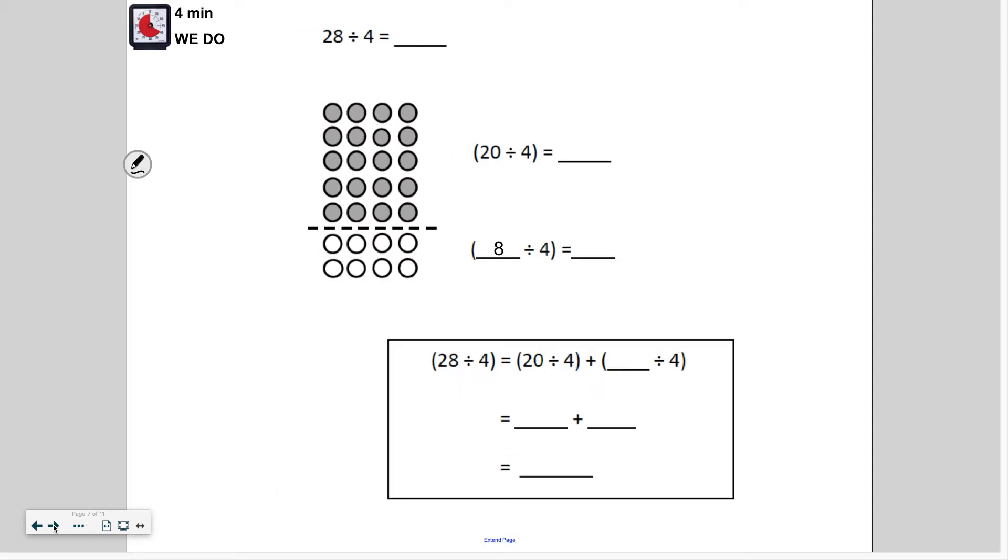So let's go ahead and do one together. 28 divided by 4. So how did they break apart the 28? Go ahead and look at our expressions here. Well, actually our equations because that's an equal sign. So hopefully you noticed it was 20 plus 8. I have 20 and 8. So go ahead and solve these two separate facts.